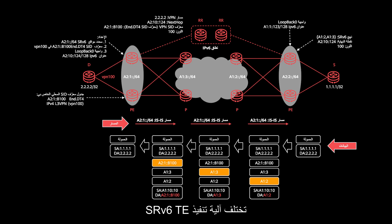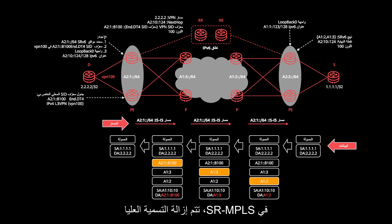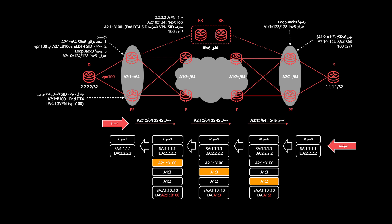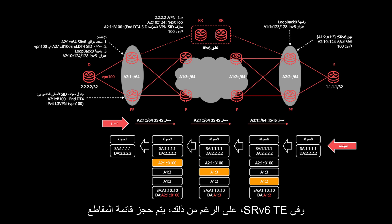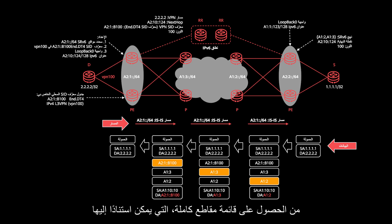The implementation mechanism of SRv6 TE is different from that of SR-MPLS. In SR-MPLS, the top label is removed each time the packet arrives at the specified node. In SRv6 TE, however, the segment list is preserved during the forwarding process. This enables the egress PE to obtain a complete segment list, based on which the SRv6 path used for packet forwarding can be determined.